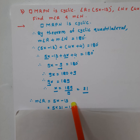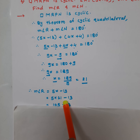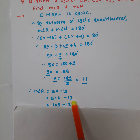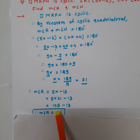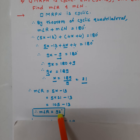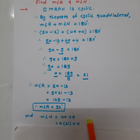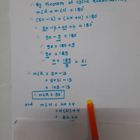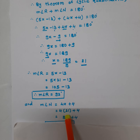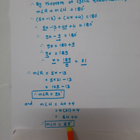Substituting x equals 21 into the expressions: angle R equals 5 times 21 minus 13, which is 105 minus 13, that is 92 degrees. Angle N equals 4 times 21 plus 4, which is 84 plus 4, that is 88 degrees.